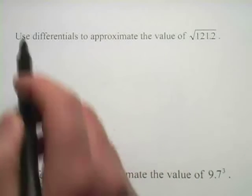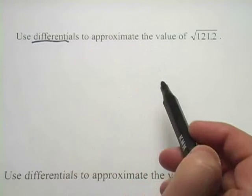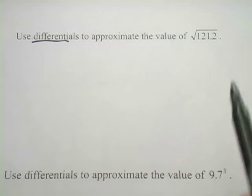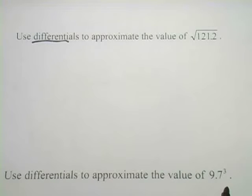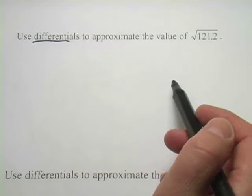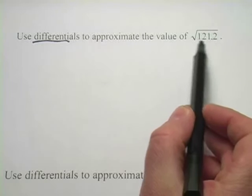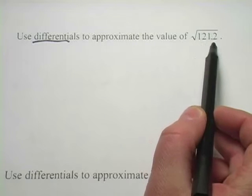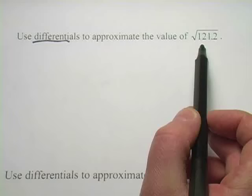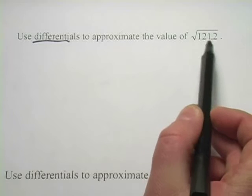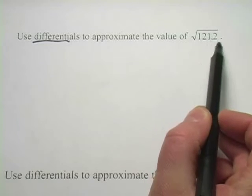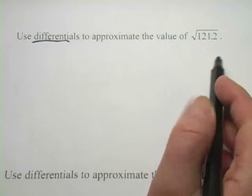In these problems, we're being asked to use differentials to approximate the value of, in this case a square root, and down here a value cubed. The trick here is that we know the square root of 121. That's pretty easy. That's just 11. If we want to estimate the value of the square root of 121.2, we can use differentials.